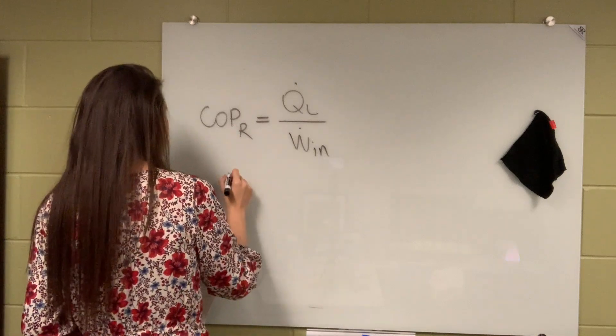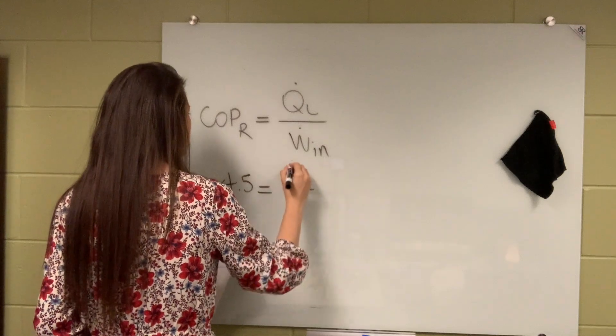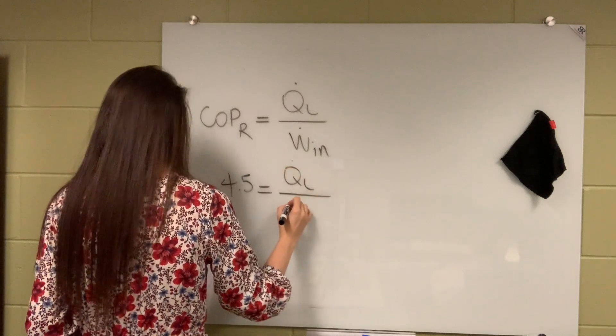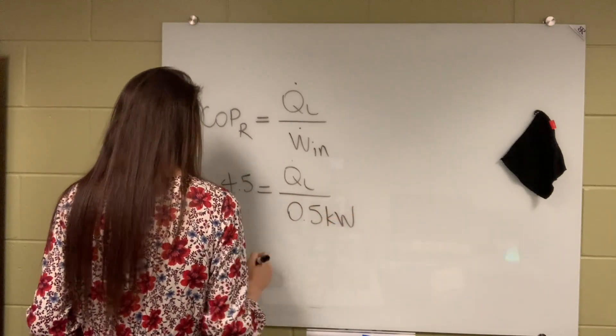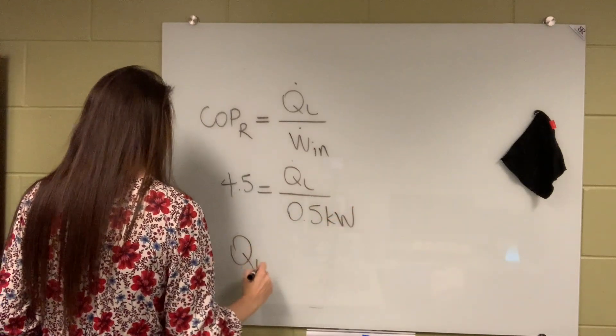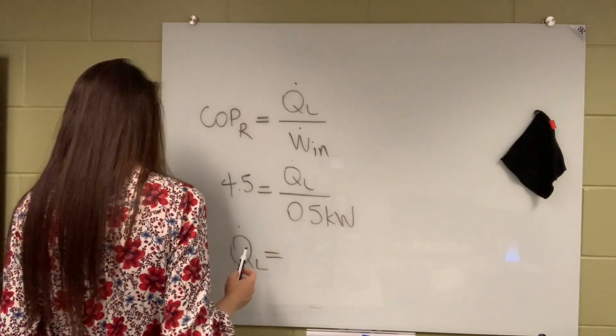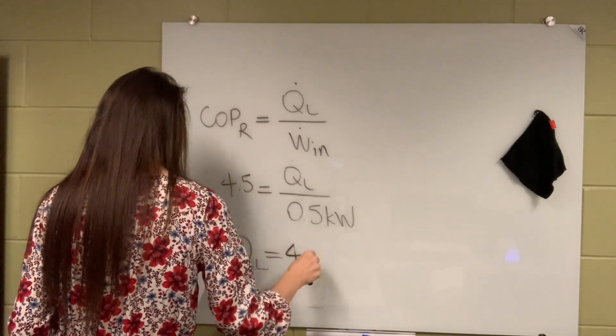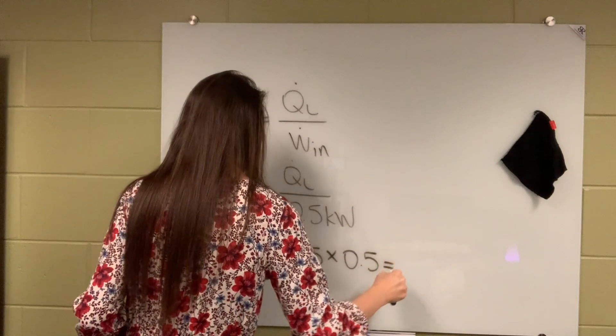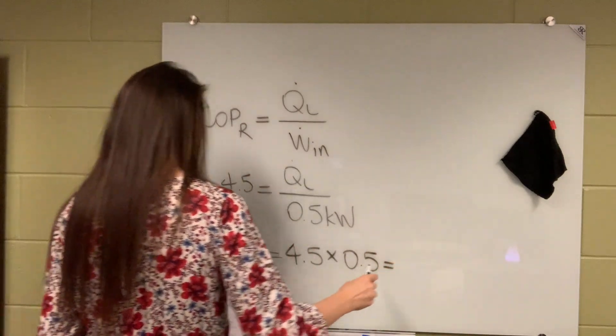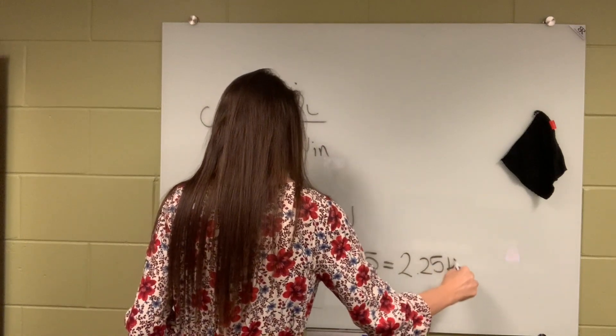So from here, this is 4.5. I'm trying to figure this out. And this was already given to us as 0.5 kilowatts. And you can easily calculate the rate of heat interaction between the refrigerated space and the refrigerator, which is 4.5 times 0.5, which is equal to 2.25 kilowatts.